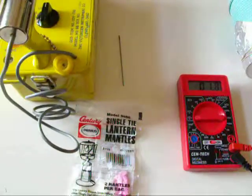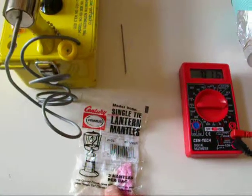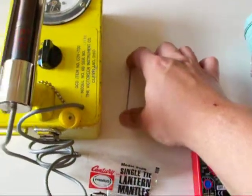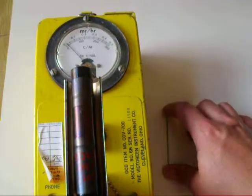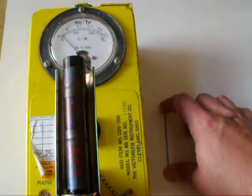I have some check sources, we're going to check it with some thorium lantern mantles, a thorium TIG welding rod, 2% thorium. I have my CDV700 set up here. You can hear it clicking every now and then, that's just background radiation going through the Geiger tube.